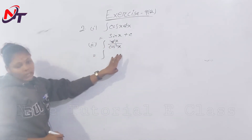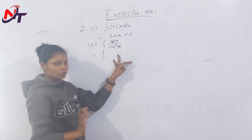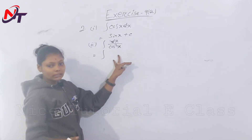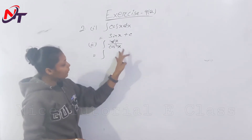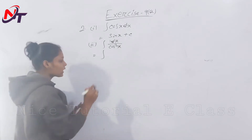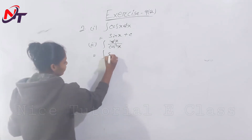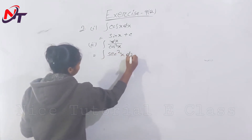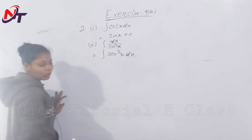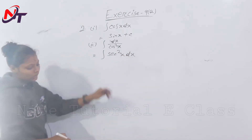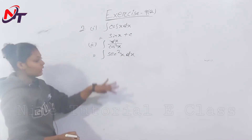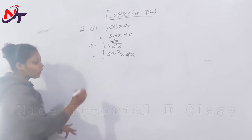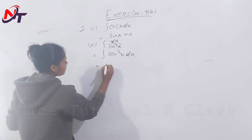We have 1 by cos square x, which is sec square x. So integration of sec square x dx. Using the standard formula, the integral of sec square x is tan x plus c.